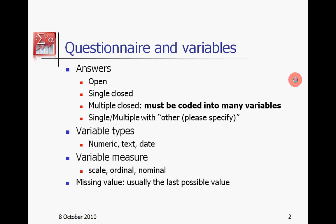We have already seen how to build a questionnaire and the different types of answers. Variable types include numeric, text, and date — most will be numeric, even when the answer is textual such as good, very good, low, which is usually converted to numbers. We discussed variable measure, which is very important because it determines which statistical tests you can and cannot perform.